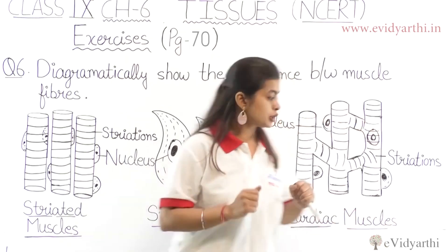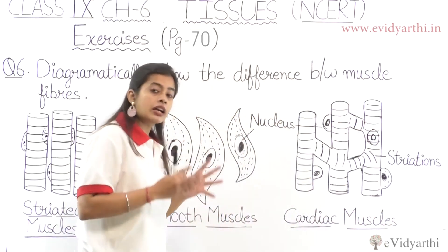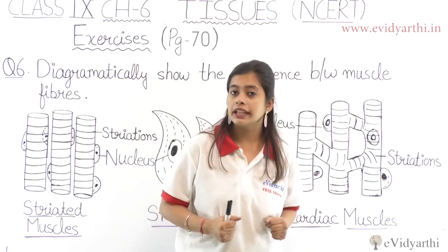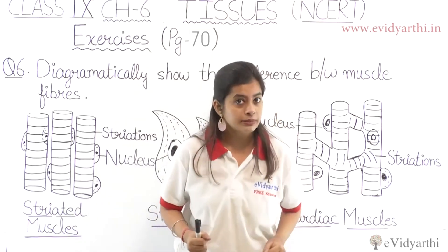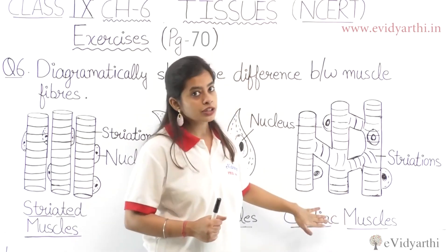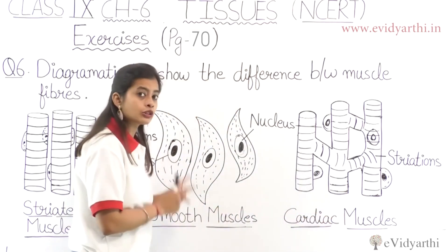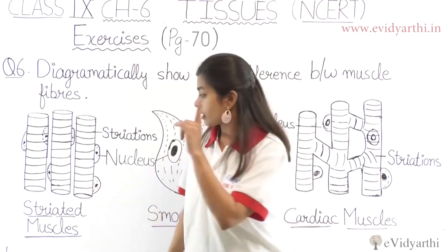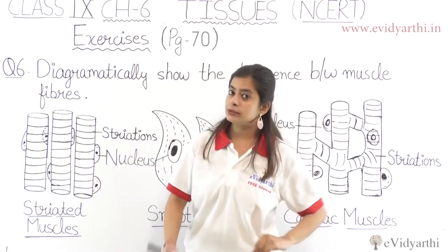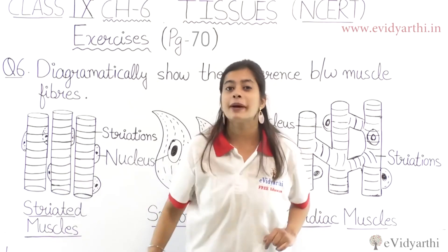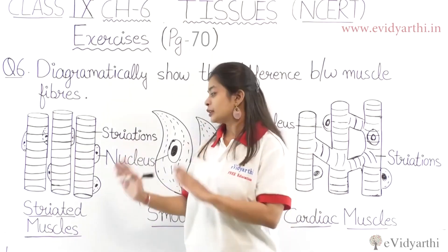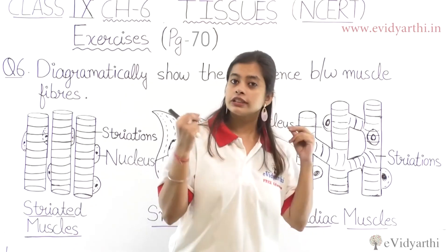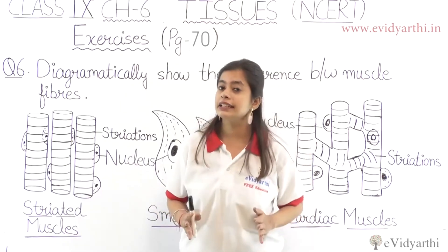Now coming to the cardiac muscles. Cardiac muscles are heart muscles. They are involuntary muscles, just as smooth muscles are also involuntary muscles.